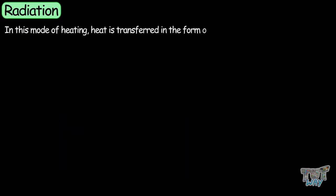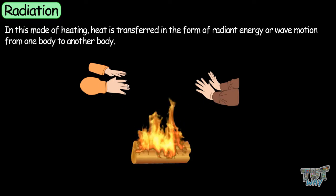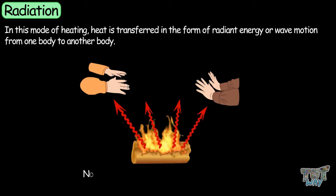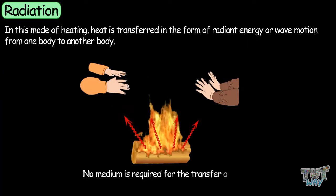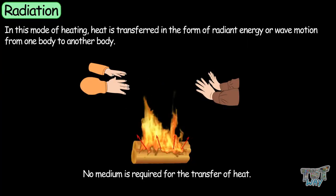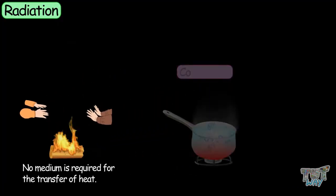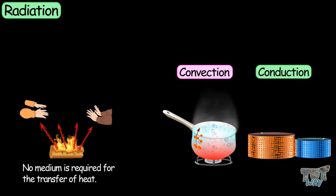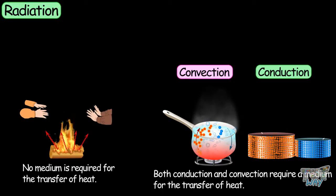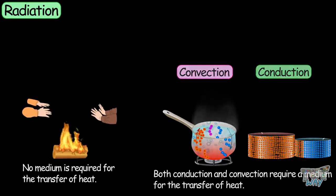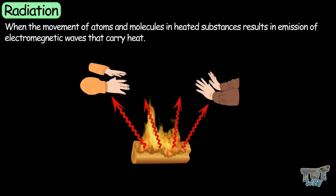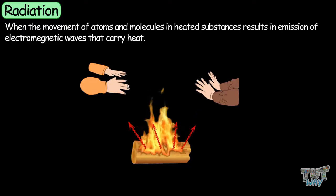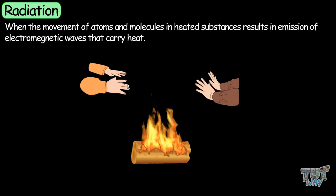Now let's learn about the third mode of heat transfer, which is called radiation. In this mode, heat is transferred in the form of radiant energy or wave motion from one body to another, and no medium is required — or heat is transferred through a transparent medium. Unlike convection and conduction, which both require some medium for heat to travel, radiation involves random movements of atoms and molecules in heated substances resulting in the emission of electromagnetic waves that carry heat.